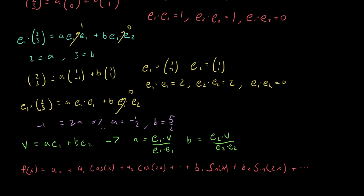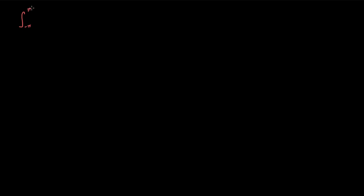So how do we solve for the coefficients? We repeat the exact same thing we did in the linear algebra case. We use the fact that the basis functions are orthogonal — that these sine and cosine functions are only non-zero when taken with themselves. So what are the orthogonality relationships for sine and cosine? Basically, what do we get when we compute the dot product between two trig functions? Well, the dot product between two trig functions is the integral of the two basis functions multiplied together.